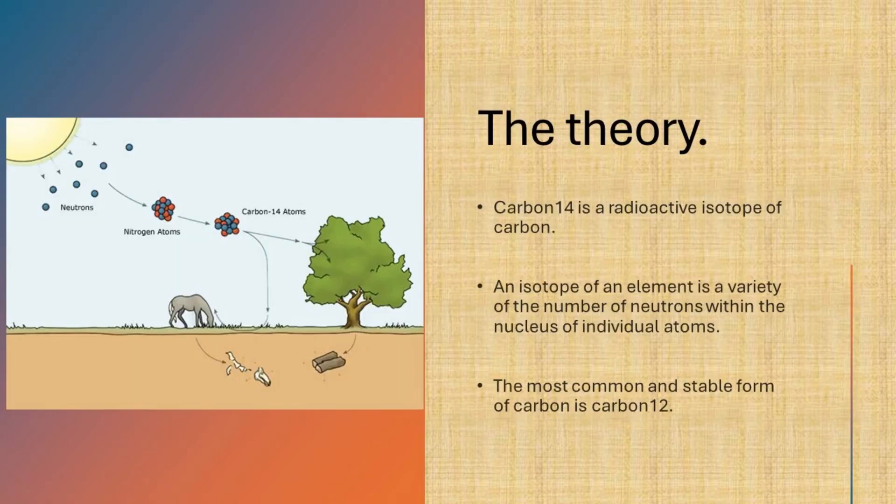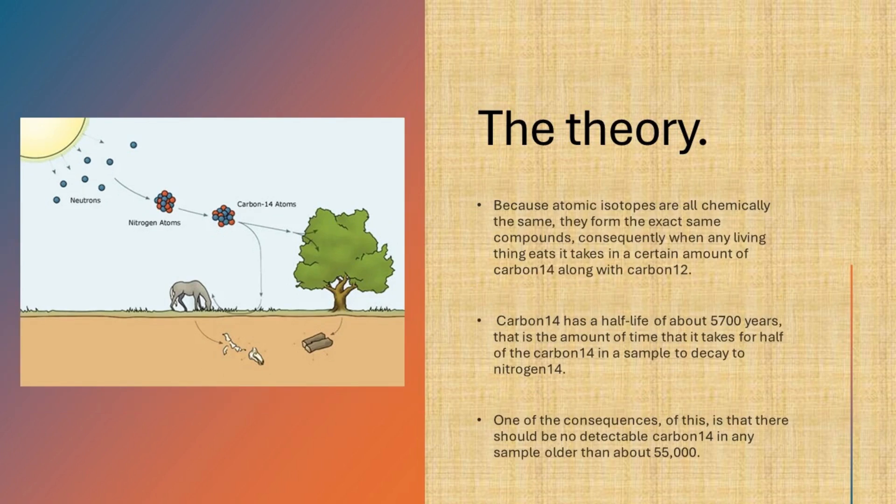Carbon-14 is a radioactive isotope of carbon. An isotope of an element is a variety of the number of neutrons within the nucleus of individual atoms. The most common and stable form of carbon is carbon-12. Because atomic isotopes are all chemically the same, they form the exact same compounds.